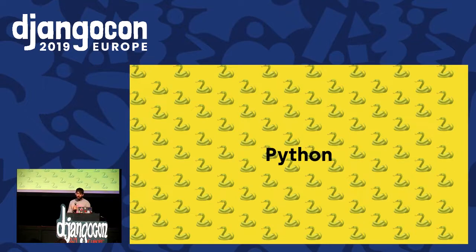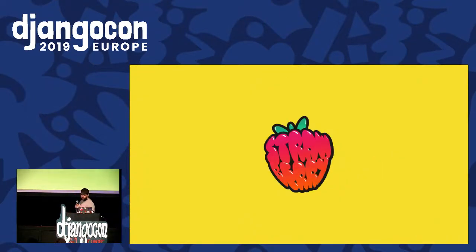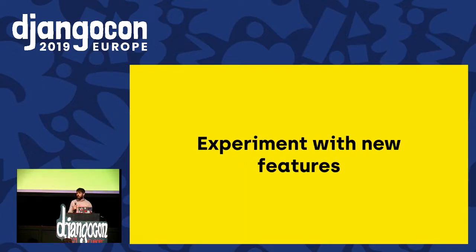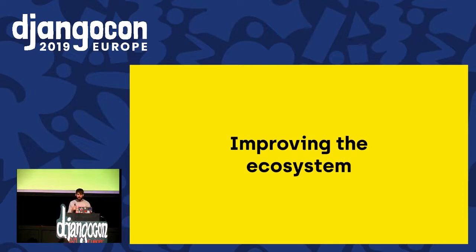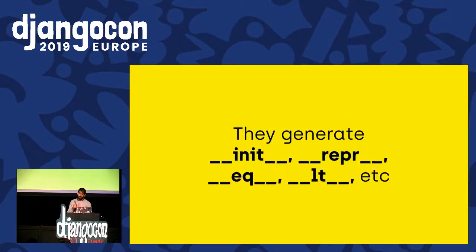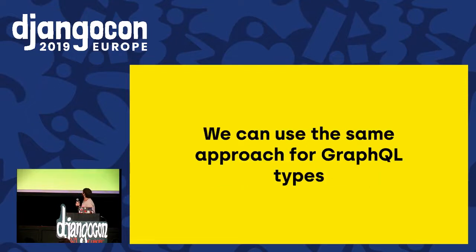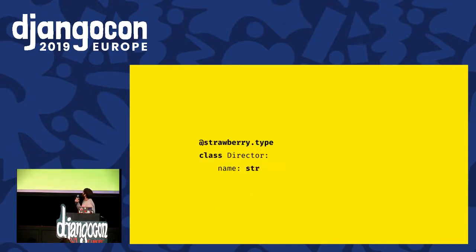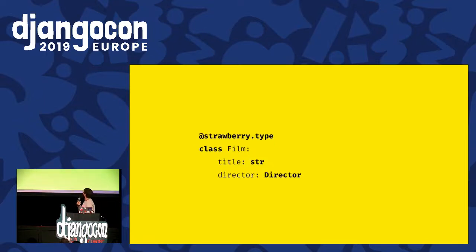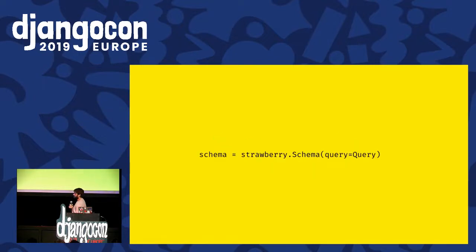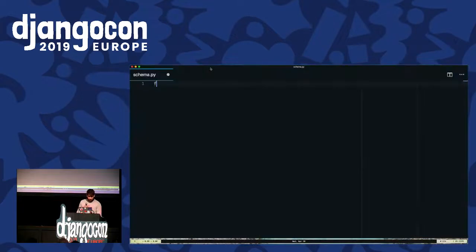There are some options with Python, but I'm just going to talk about the one I'm working on because I don't have much time. It's called Strawberry. I'm working on it because I just want a side project for fun and learning new Python features, and also to experiment with new GraphQL features and improve the ecosystem — GraphQL in Python is quite new. How does it work? It's based on data classes — a class where you define the fields and the types all together, and they generate an equality method, replication method, and so on. We can use the same approach for GraphQL. This is the schema we had before: you can define a type 'Director' using the decorator as a type, and then define the name — same for all the other types.